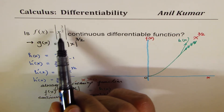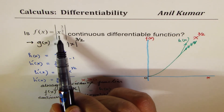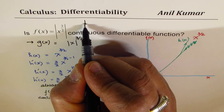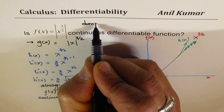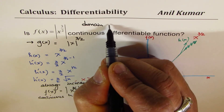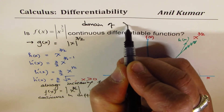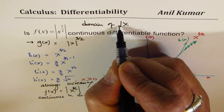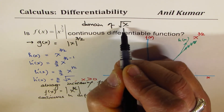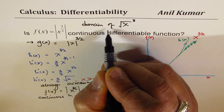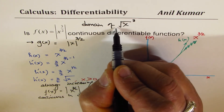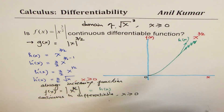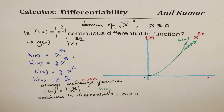When we have the function x to the power of 3 over 2, we also know the domain — it can be written as square root of x, then cubed — so the domain is x greater than or equal to 0.